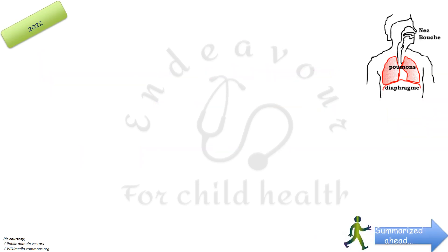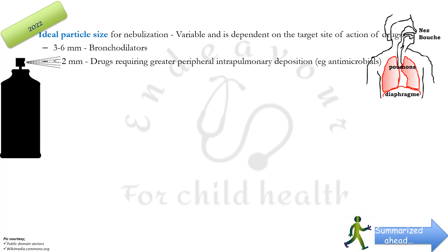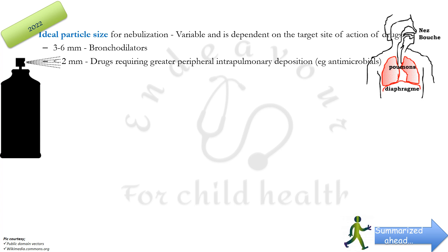Talking about particle size, the ideal particle size for nebulization is variable and dependent on the target site of action of the drug. For bronchodilators, the ideal particle size should be 3 to 6 micrometers, and for drugs which require greater peripheral intrapulmonary deposition — for example, antimicrobials which need to be deposited in the alveoli — the particle size is still smaller, less than 2 micrometers.